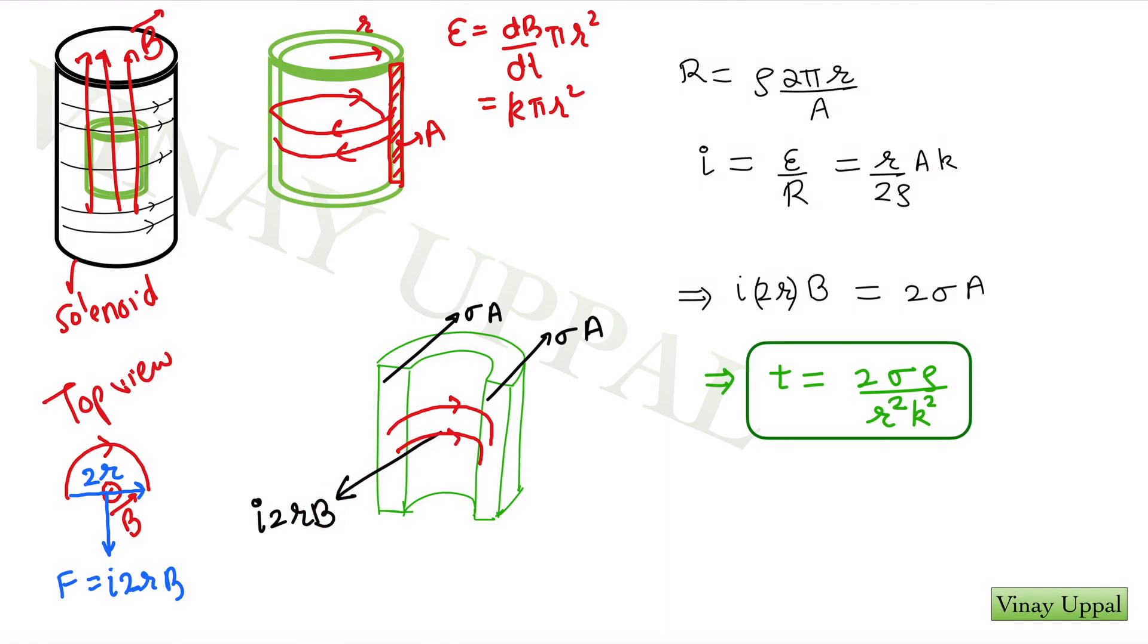And therefore, I'll have a magnetic force this way, I into 2r into B. And this magnetic force, you can see it's trying to compress the cylinder inwards. Therefore, in order to resist this force, the other half of the cylinder is going to apply a compressive force back on these red sections.